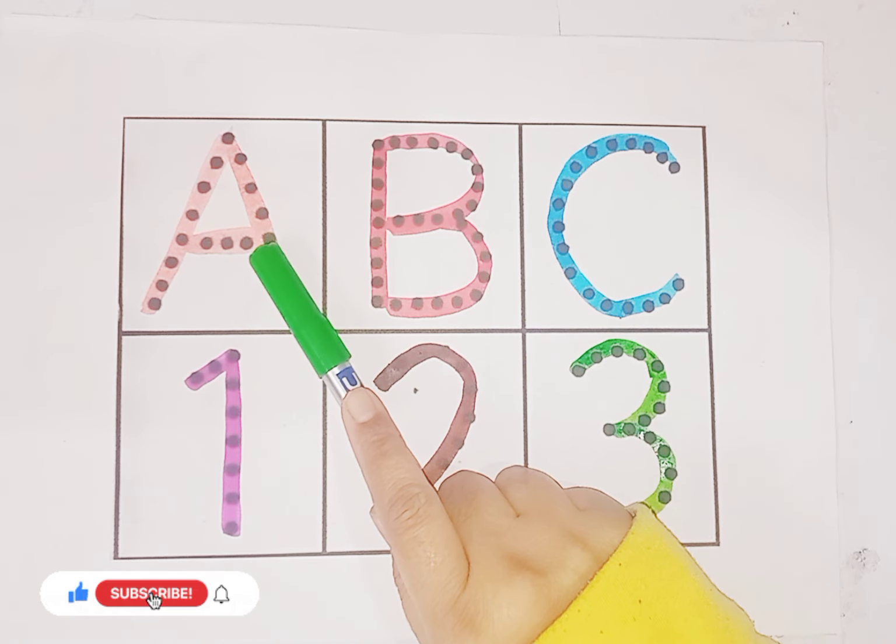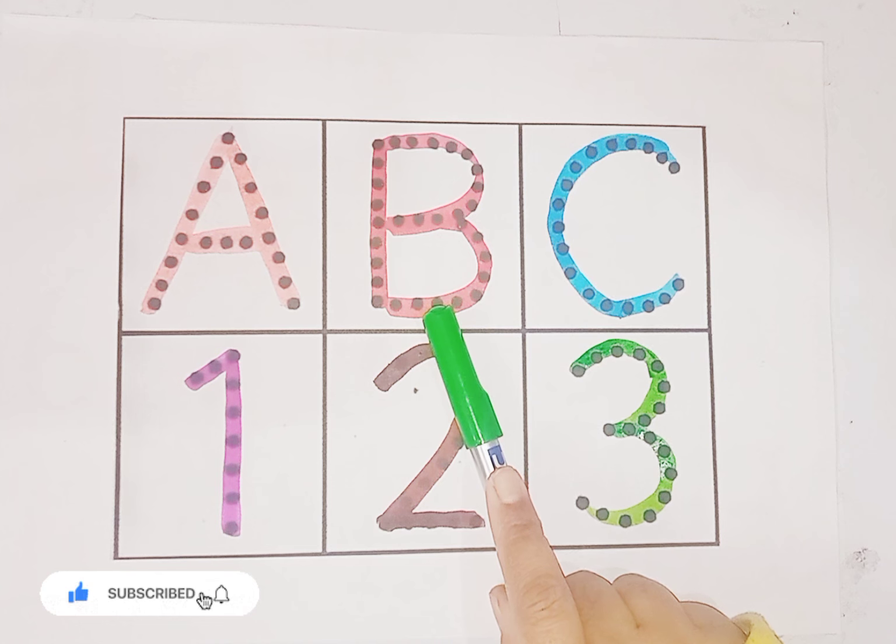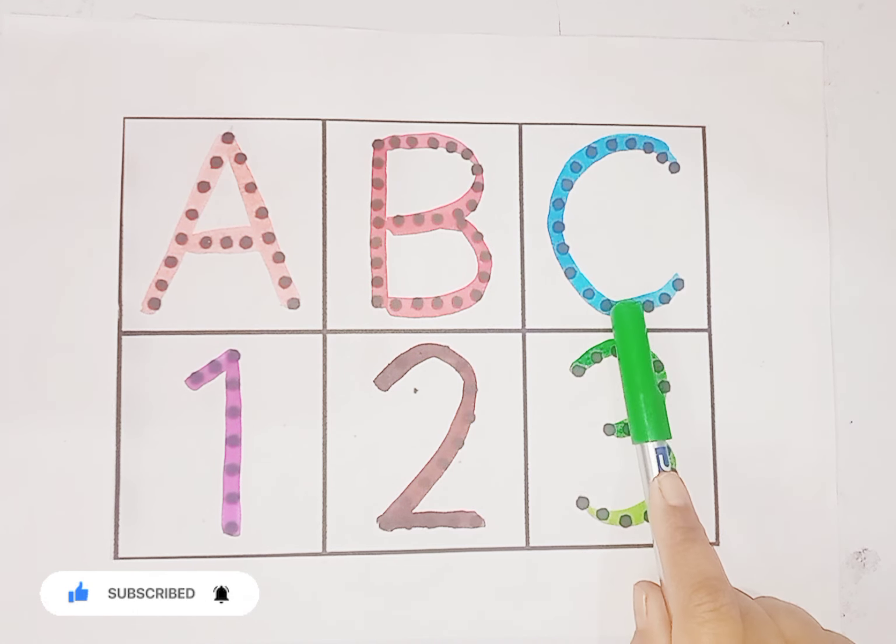A. A for Apple, A for Ant. B. B for Ball, B for Bat. C. C for Cat, C for Cow.